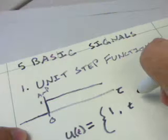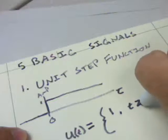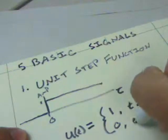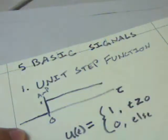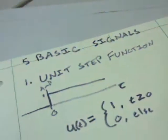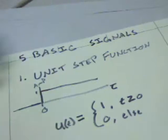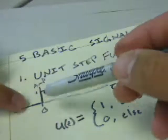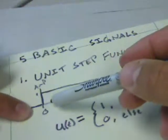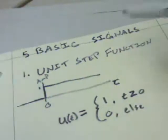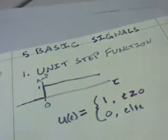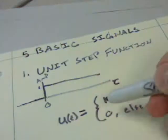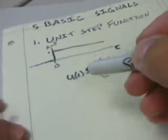t is greater than or equal to zero, and zero otherwise. That's the unit step function. It's either zero or one, and it goes from zero to one at time equals zero. There's nothing fancy about it. We can describe this whole thing by saying u(t).